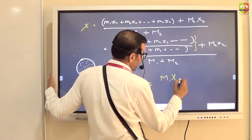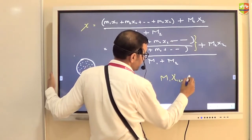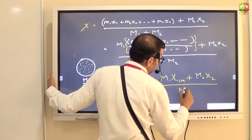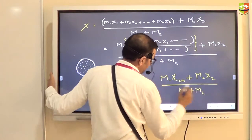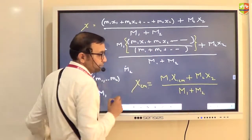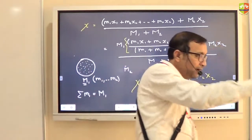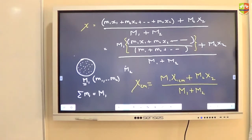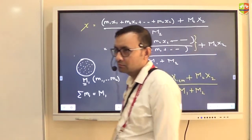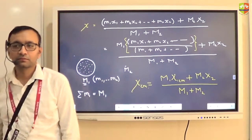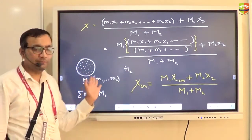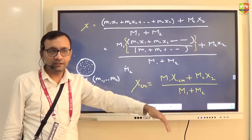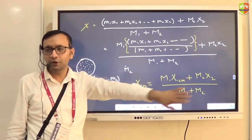The modified formula is: x_cm = (M1 × center of mass location of M1 + M2 × X2) divided by (M1 + M2). So if there is a bigger mass, you multiply the entire mass by its center of mass location. If there are multiple bigger masses, it becomes M1 × its center of mass + M2 × its center of mass, and so on, divided by the total mass of the system.